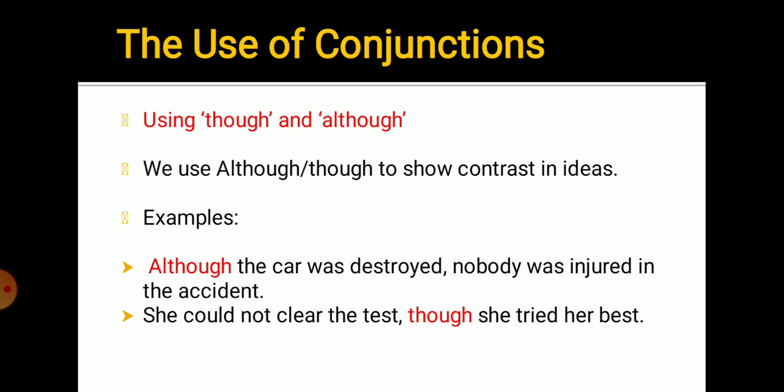Coming to though and although. We use although or though to show contrast in ideas. Although the car was destroyed, nobody was injured in the accident. There's a contrast - if the car was completely destroyed, generally everyone should be injured, but there's a contrast. The car was destroyed but nobody was injured. She could not clear the test though she tried her best. There's a contrast - she tried her best but didn't clear the interview. So though and although show contrast in ideas.